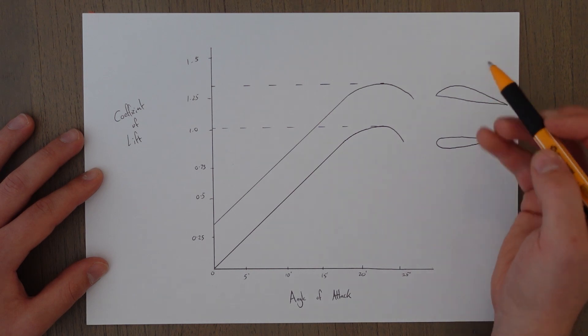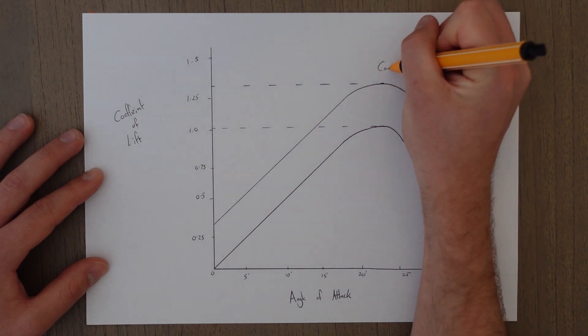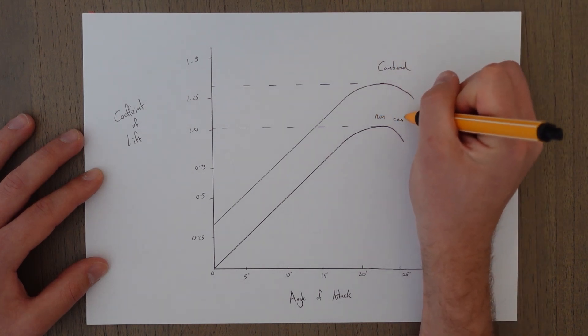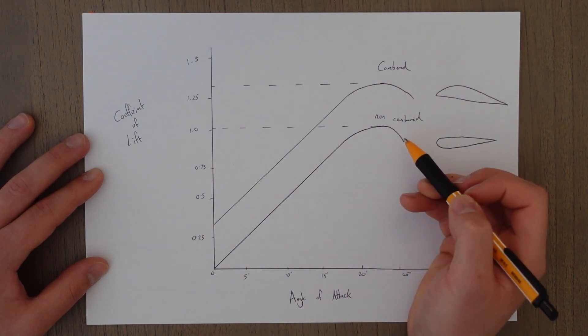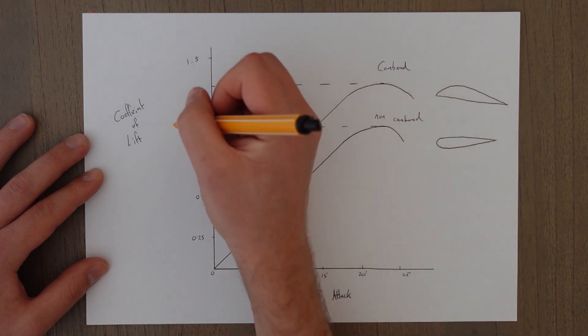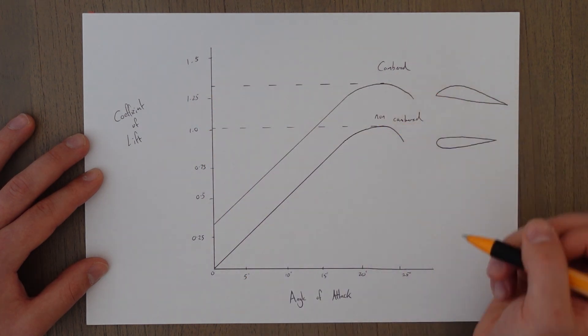So the camber of the wing is the measure of that curve that appears on the top of the wing. And as you can see, this is the cambered wing up the top and this is the non-cambered down below. So this should be representative of that very first graph that we saw. It's just a steady increase in angle of attack until we reach our CL max, then it decreases and eventually stalls.